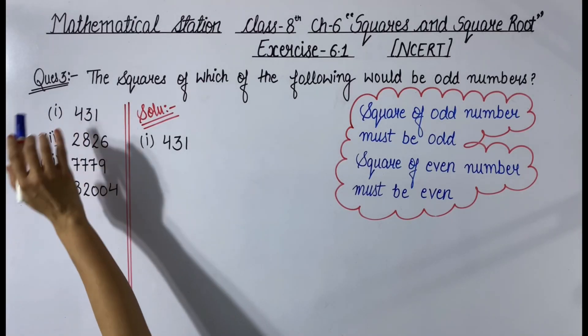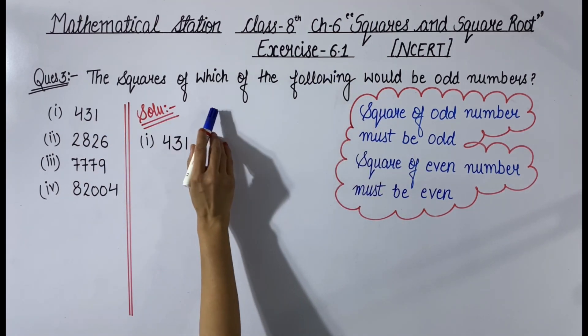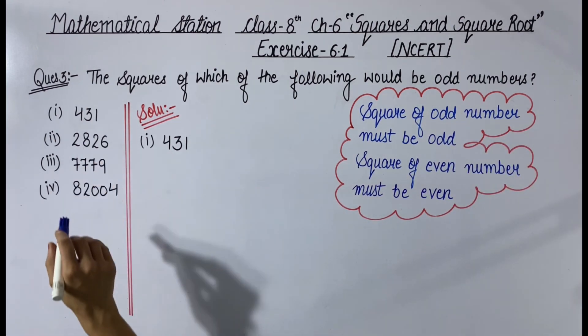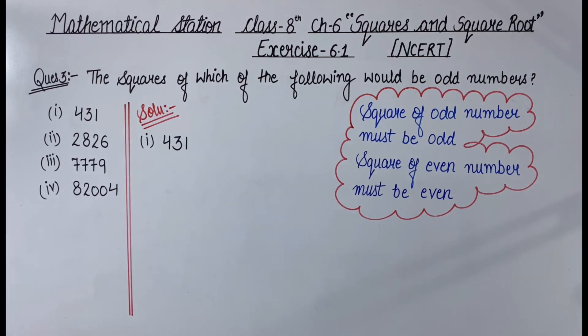Now next is question number 3 from exercise 6.1. The question is: the squares of which of the following would be odd numbers? Here are some numbers given and the question asks which number's square is odd. We will discuss some squares in order to start with the solution.